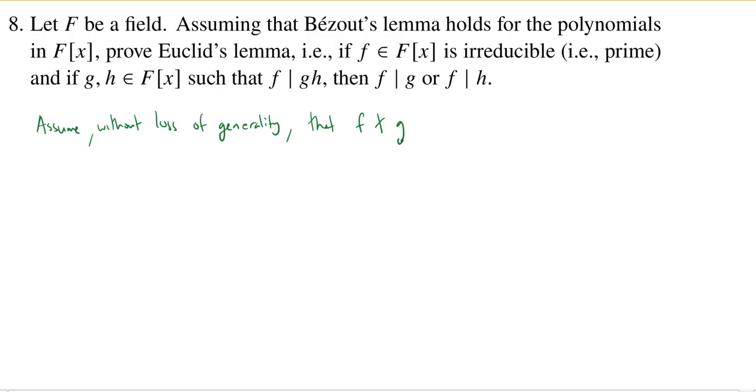If it doesn't divide g it still might have some sort of greatest common divisor between the two, f and g. But because f is irreducible, the only factors of f are essentially going to be f and a constant, which we could take to be one. So since f is irreducible, the gcd of f and g is equal to one or any constant we like.